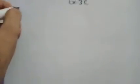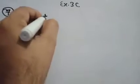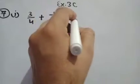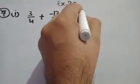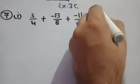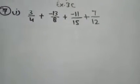Let us start. This is exercise 3c, question number 7, part number 1: 3/4 plus minus 13/8 plus minus 11/15 plus 7/12. Whenever more than two rational numbers are given, then we have to make pairs.